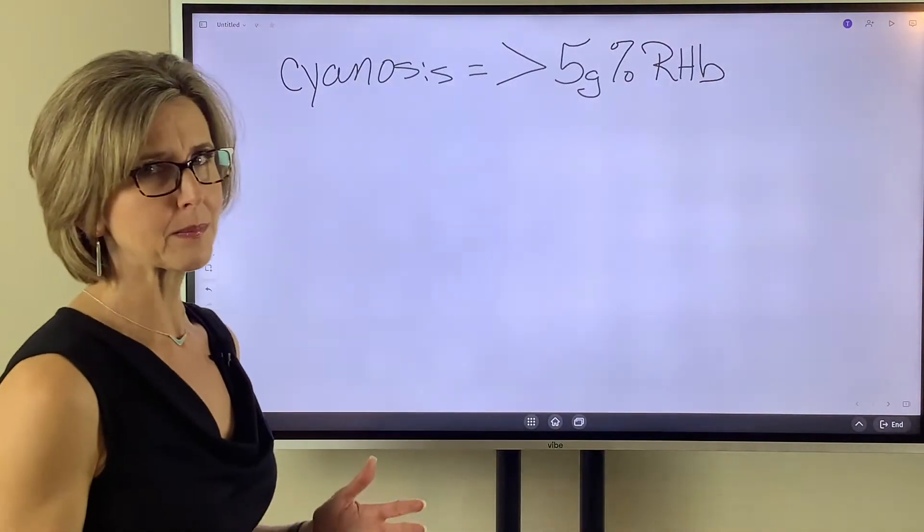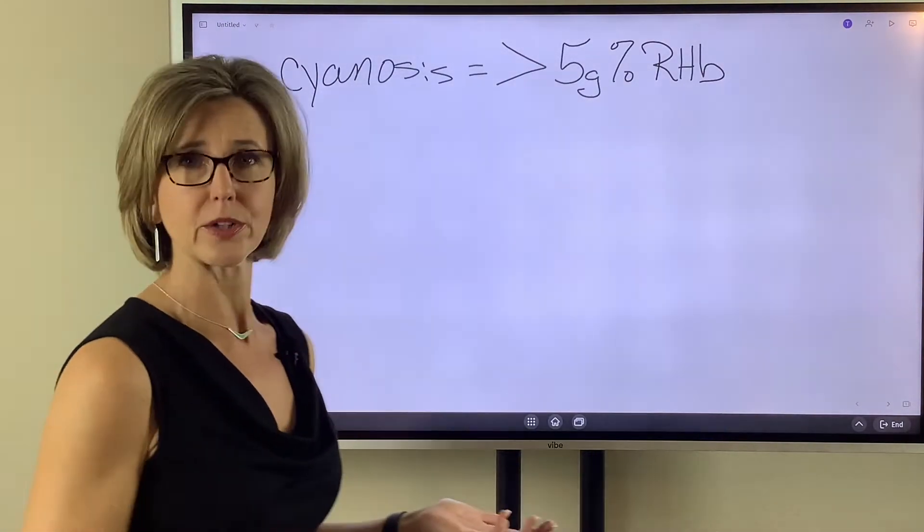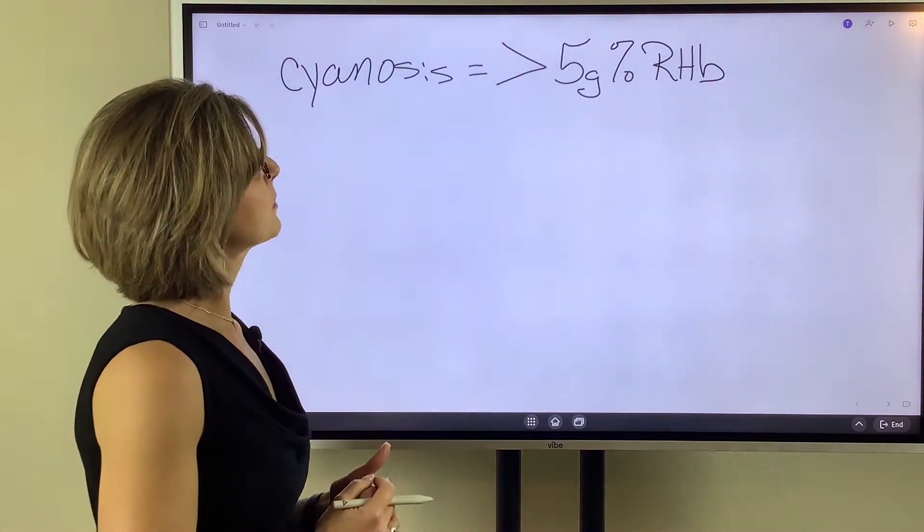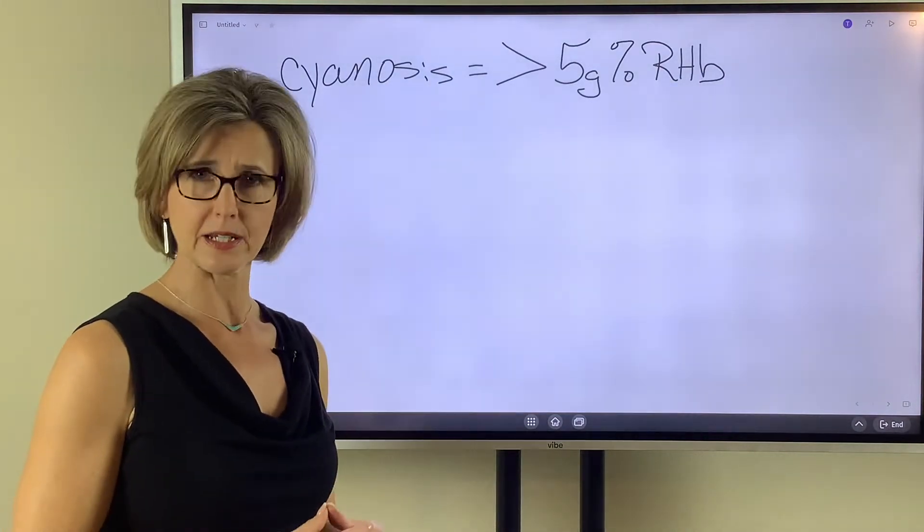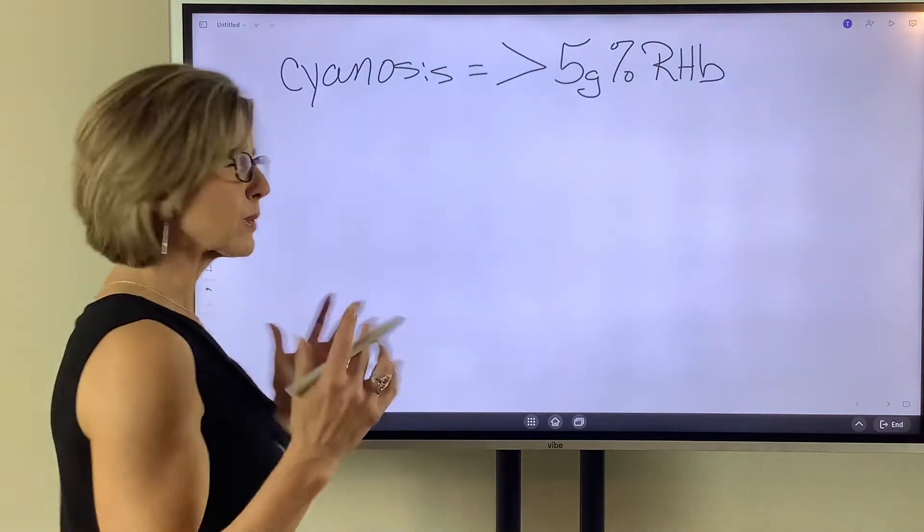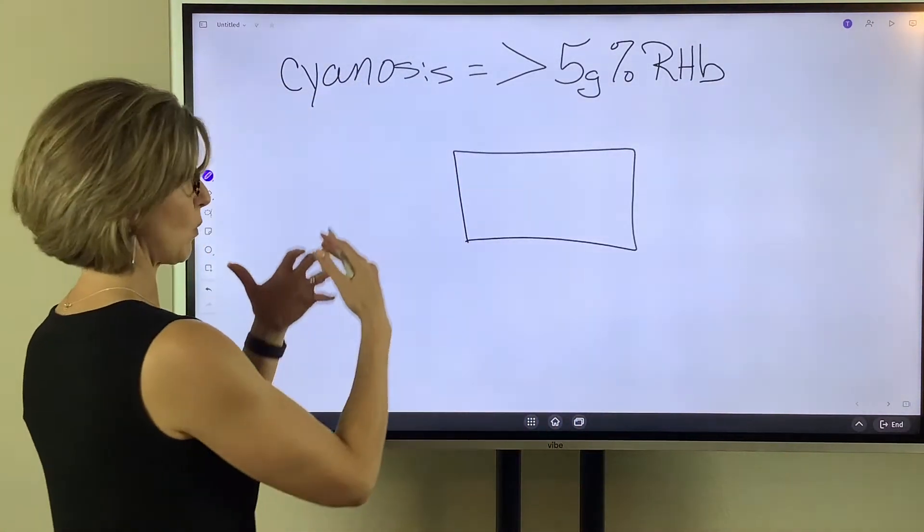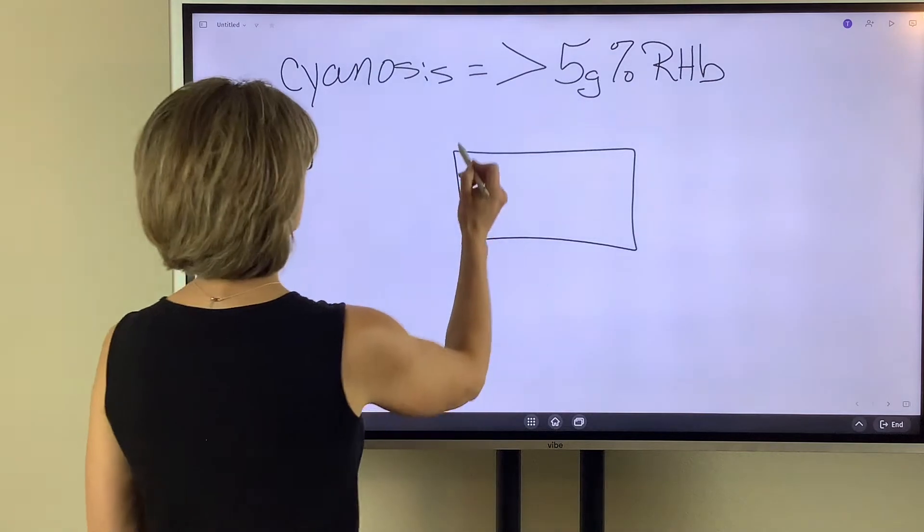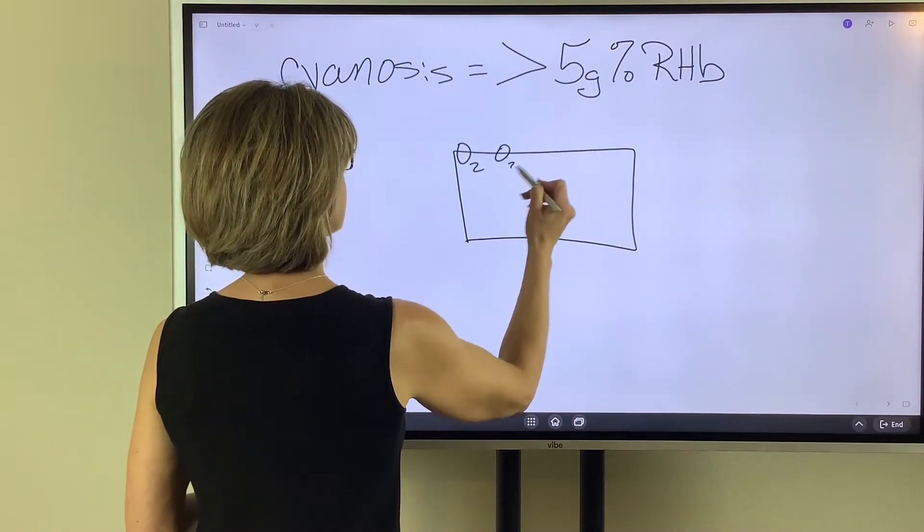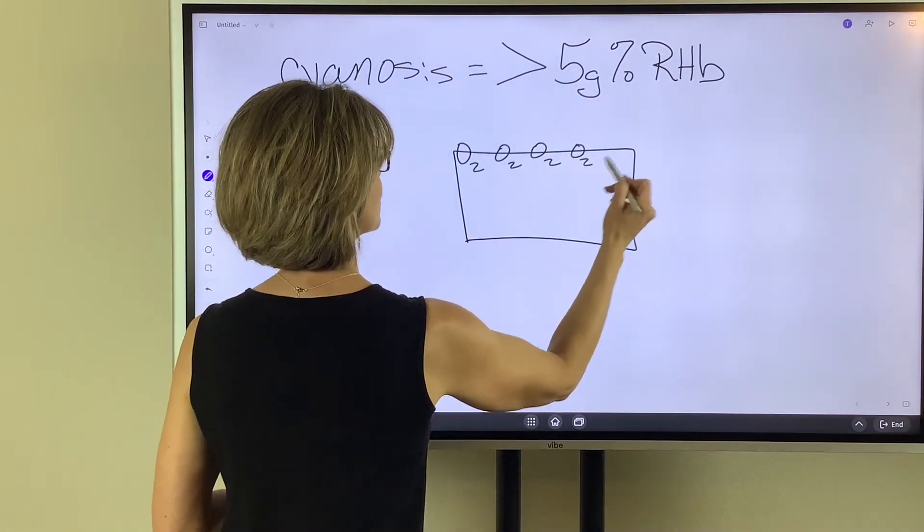Okay, now you might be saying, well, okay, I don't know what reduced hemoglobin is. Some programs when they're teaching it call this deoxygenated hemoglobin. So to give you a really quick idea, let's pretend that this is one hemoglobin molecule, and this hemoglobin has places that oxygen can attach to.